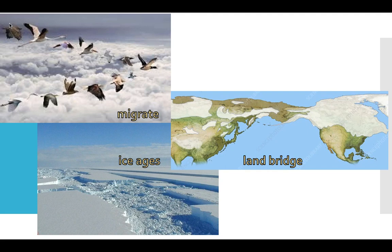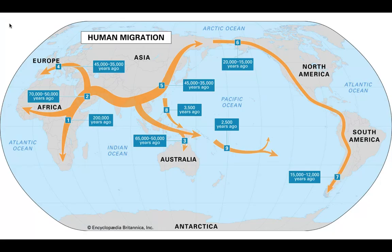A land bridge is a strip of land connecting two continents. In this case, and in this picture, we can see that there was at one point a land bridge connecting Asia to North America. The first section is on people moving out of Africa, and this map illustrates all the important parts of human migration — migration being connected to the term migrate, which means to move.